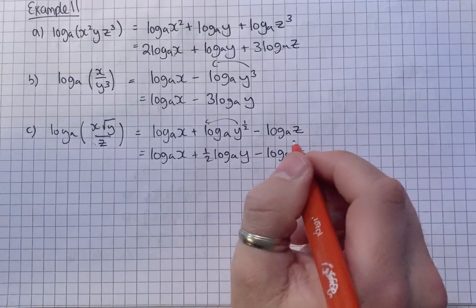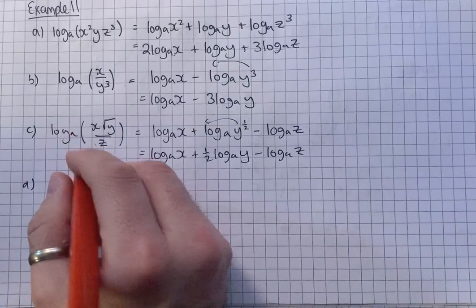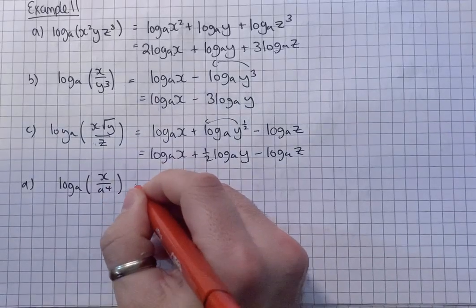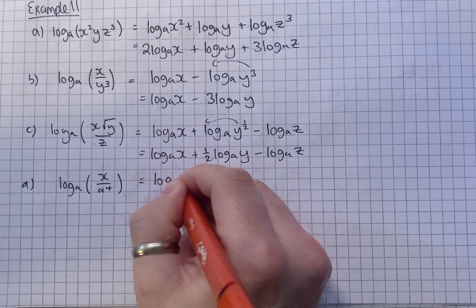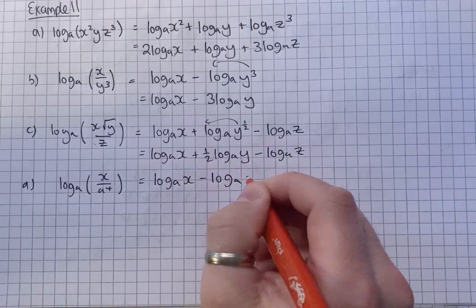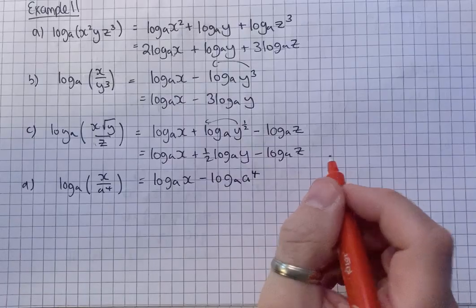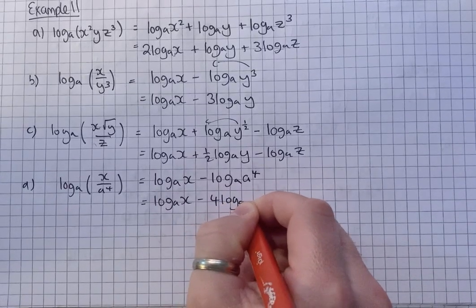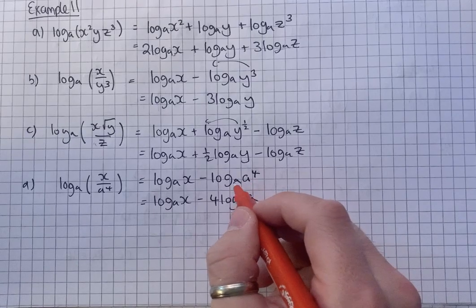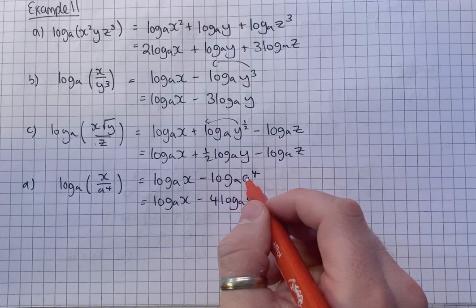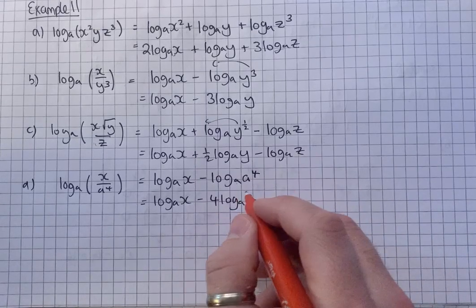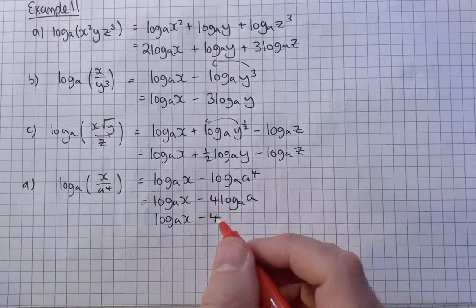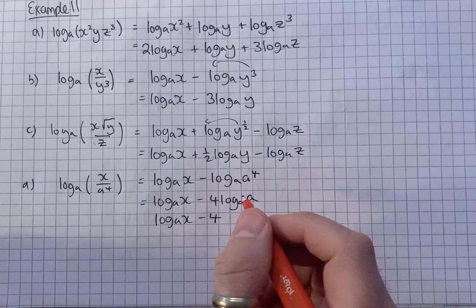And D. Log to the base a of x over a to the 4. Okay. So I'm going to split this up by subtracting. And then we can bring that to the front. And if you remember those special cases, when you've got the same base and the number here, then the sign is just equal to 1. So 4 times 1 is 4. That just cancels.